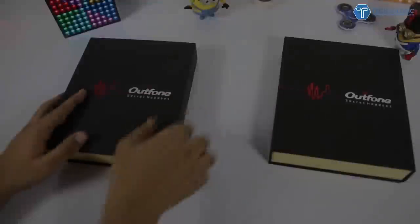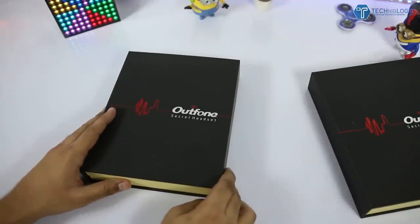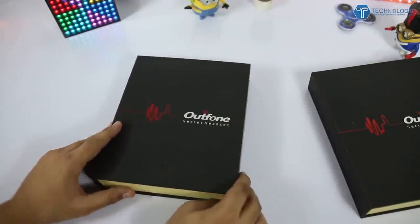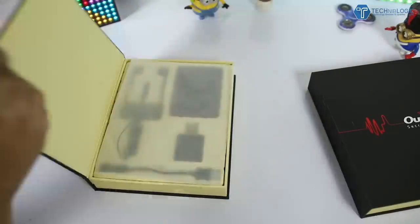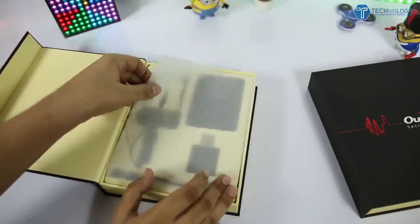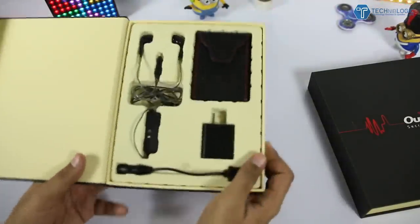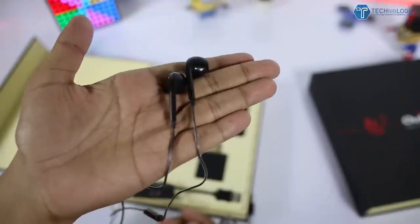Let's start the unboxing first. On the front it is coming with Outphone Secret Headset, nothing much. The quality of the box is quite good. Moving further we get different stuff into it. We get the earphones like this. The quality seems to be quite good.